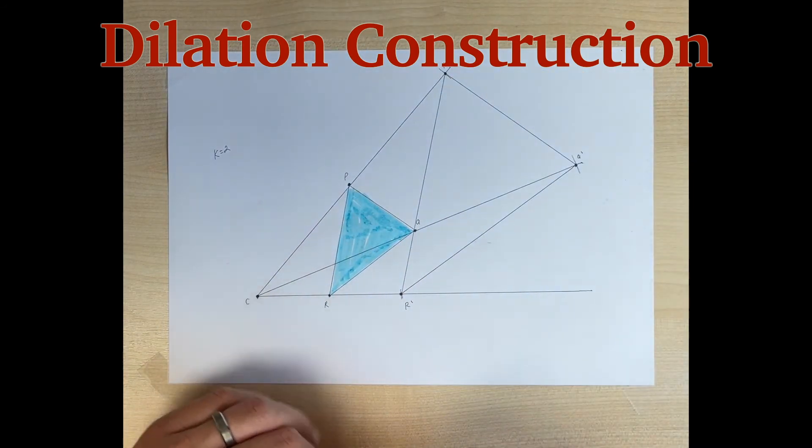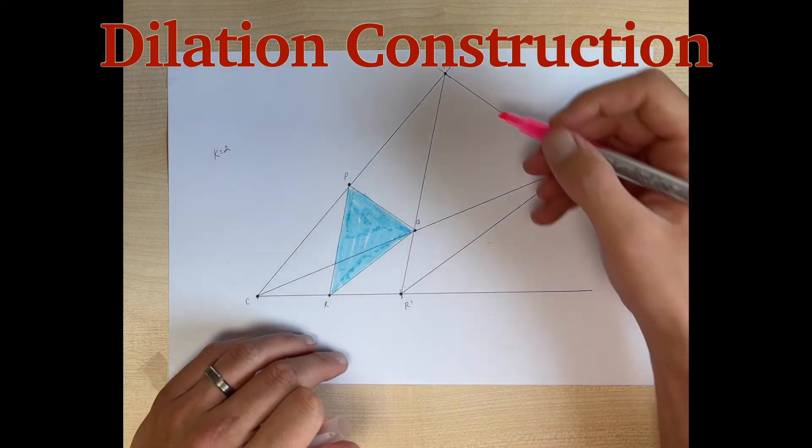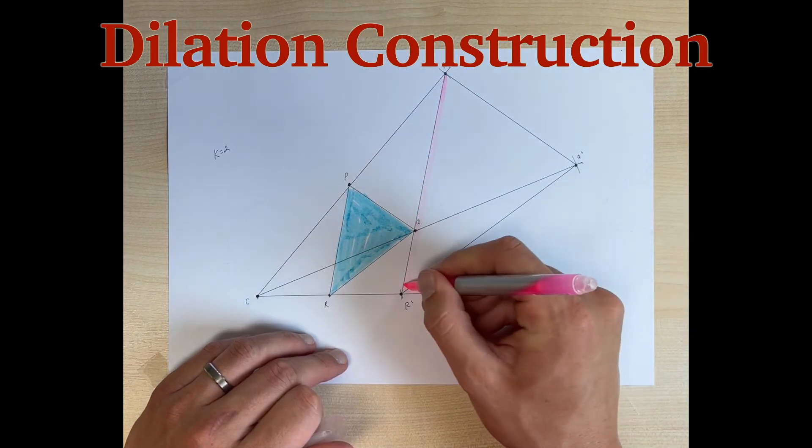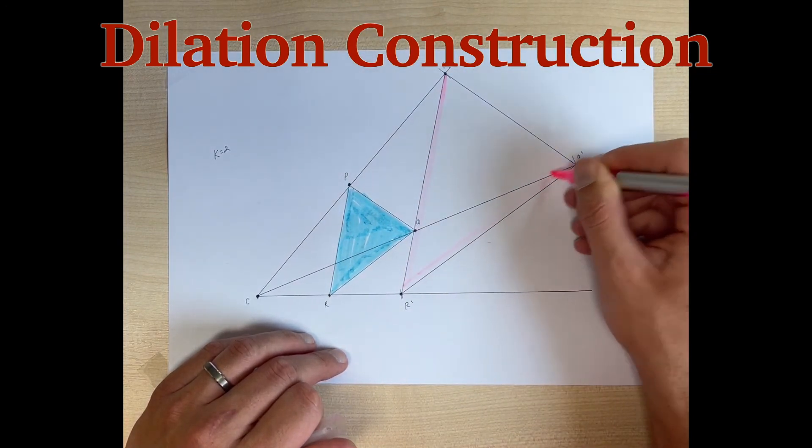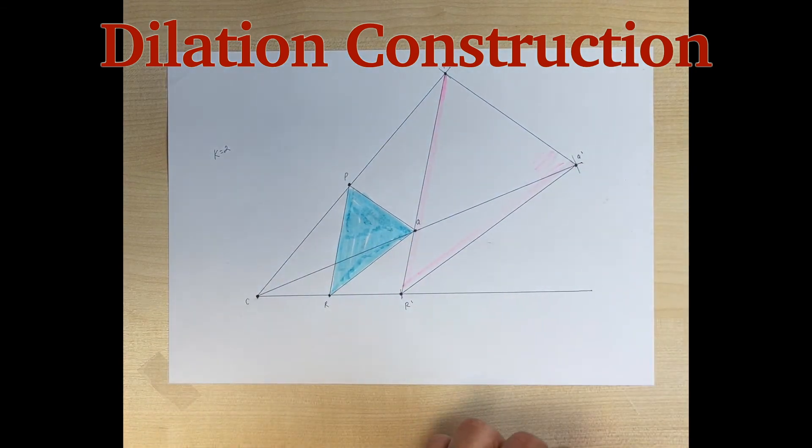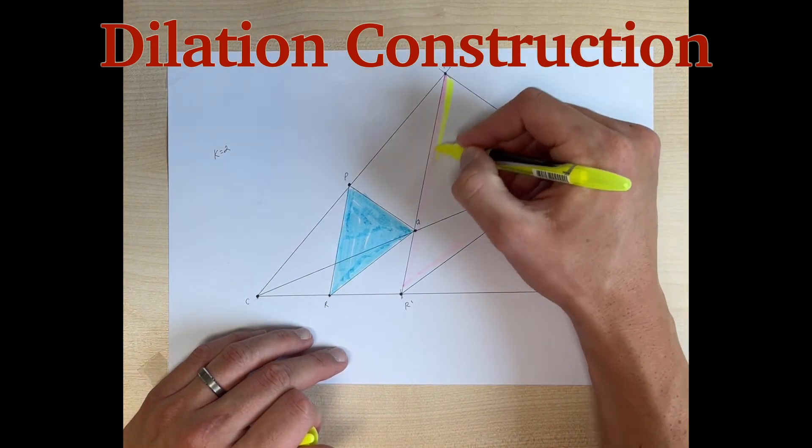Our resulting image is now this bigger triangle here that has been dilated by a scale factor of 2. We'll make it yellow here. There we go.